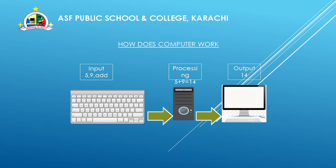Computers also work step by step. Suppose you want the computer to add two numbers — say five and nine — and give you the result of addition. You input this from the keyboard. Then the CPU is our processing unit, and it will solve the addition. The result will be shown on the monitor, and we call that output.